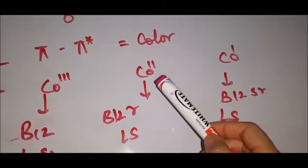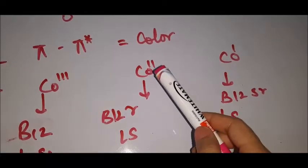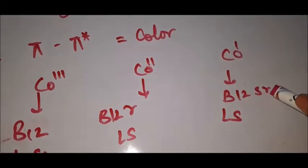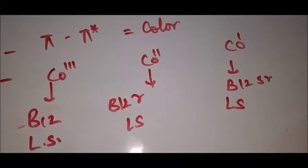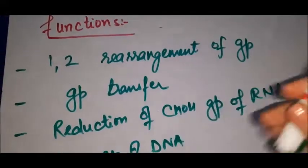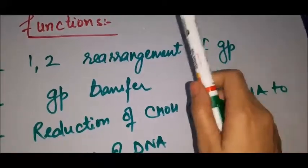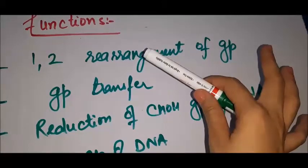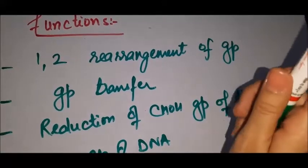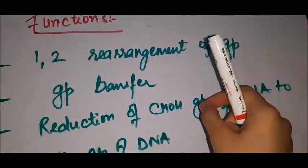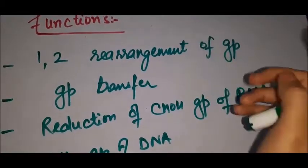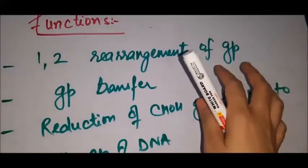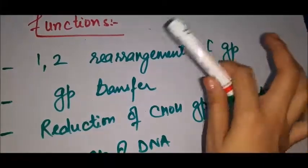In vitamin B12, the oxidation state of cobalt is Co³⁺. The first reduced form is Co²⁺ and the second reduced form is Co⁺, both in low spin configuration. The key things to remember for bioinorganic chemistry are: active site, oxidation state, low spin or high spin, functions, and structure.